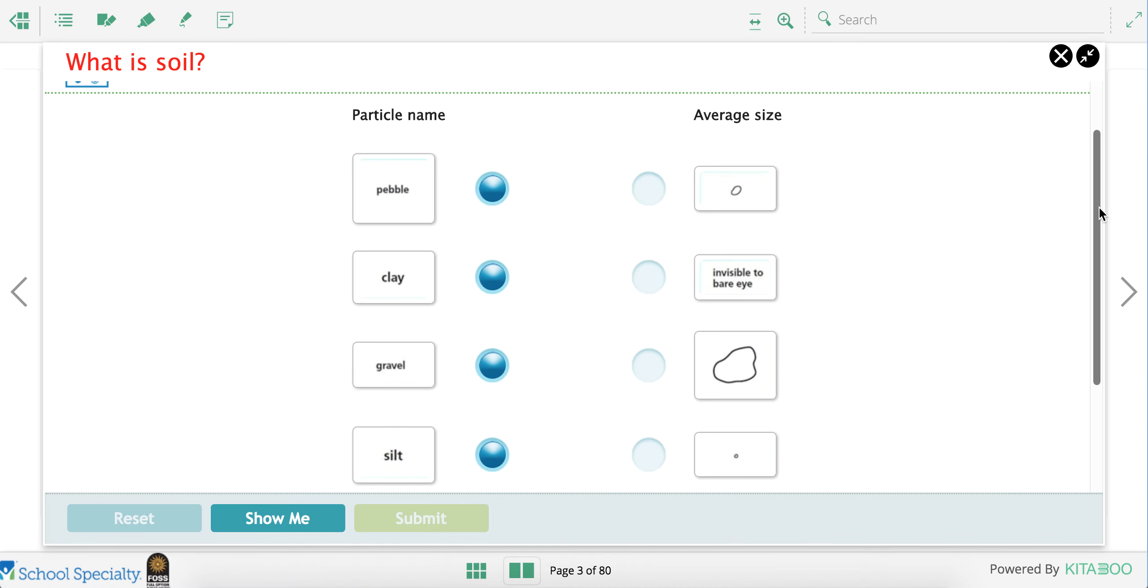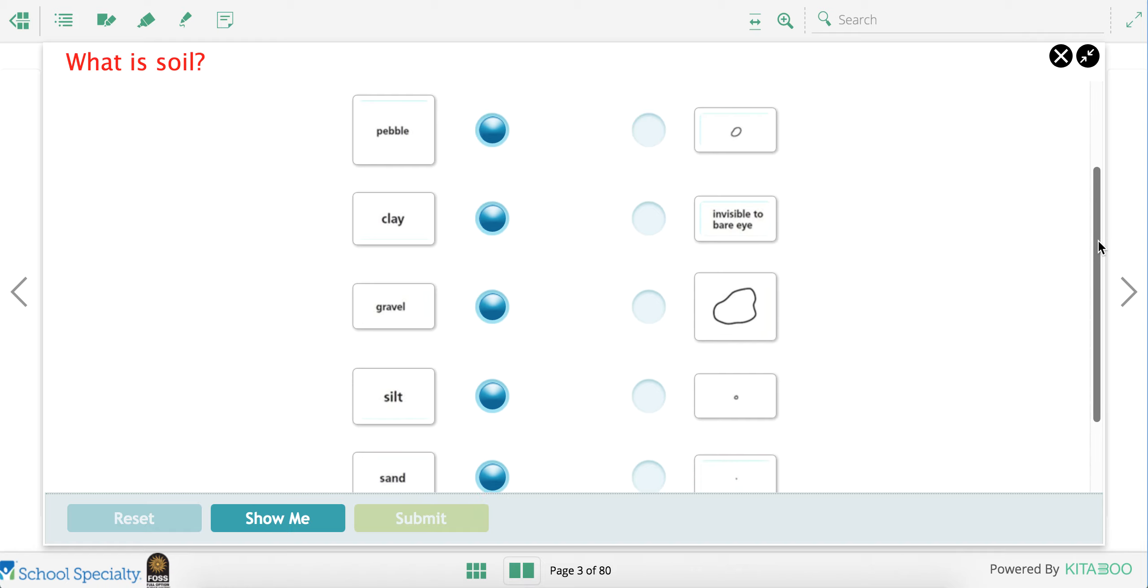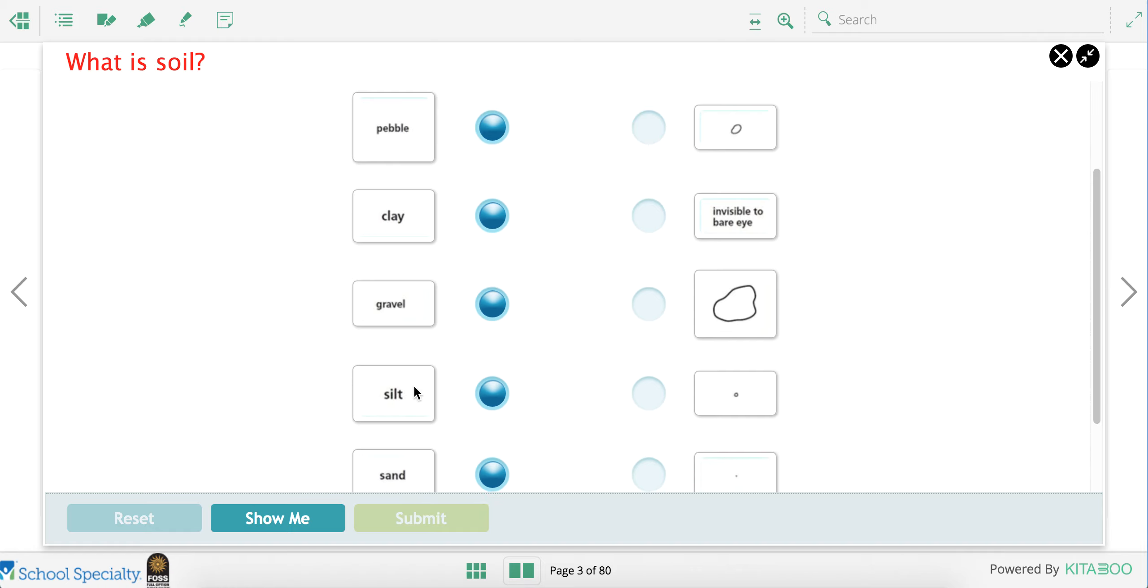Let's take a quick quiz about the different sizes of rocks. So you'll notice that on the left side, there are different particle names. On the right side, there are their average sizes. So we're going to connect them.